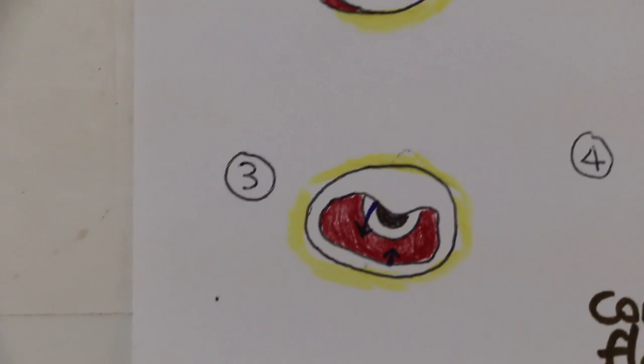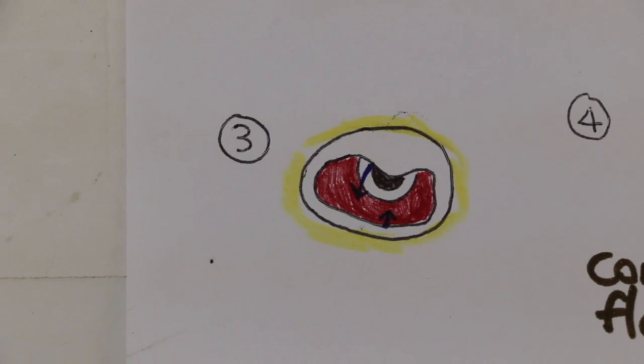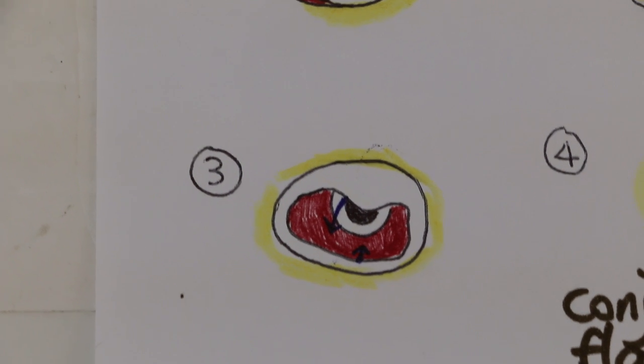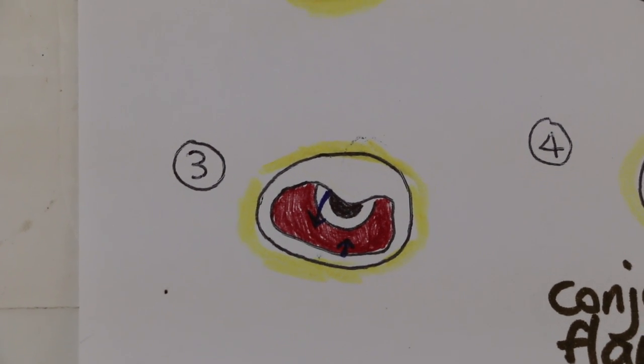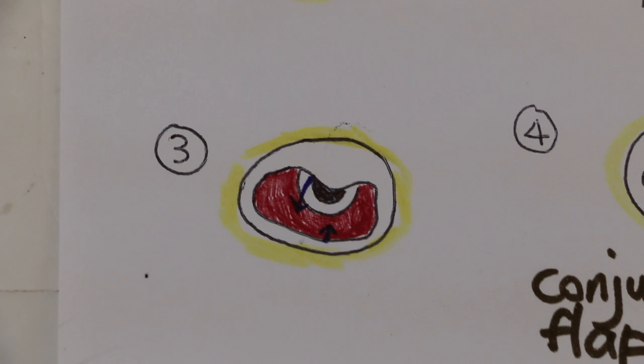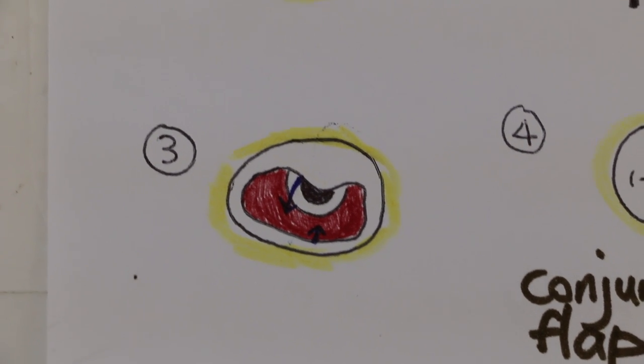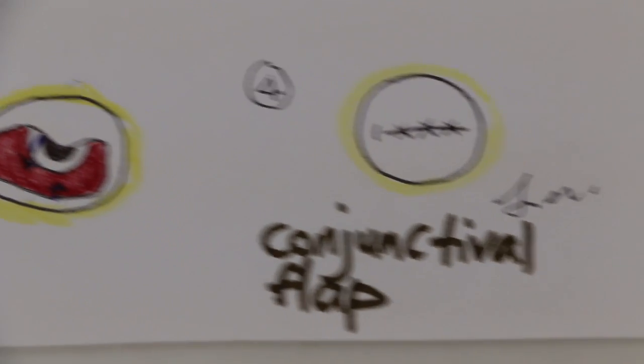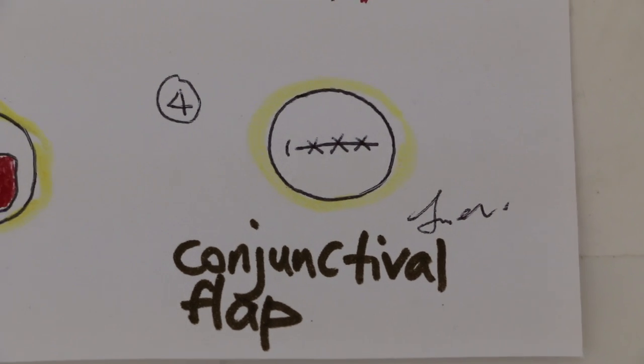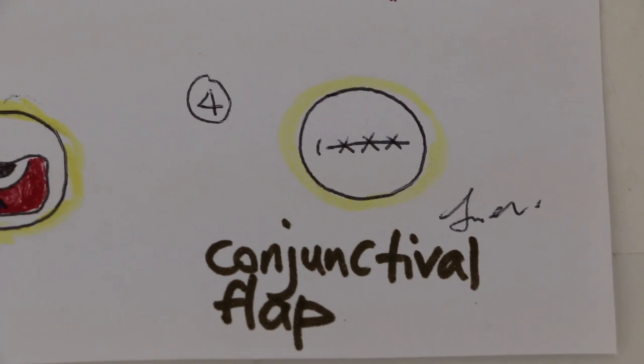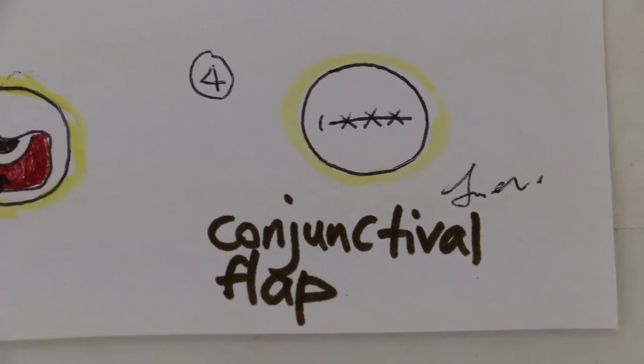Then the third image, you can see the suturing up of the upper and lower conjunctiva, and then the fourth one will be the whole cornea being closed up for healing.